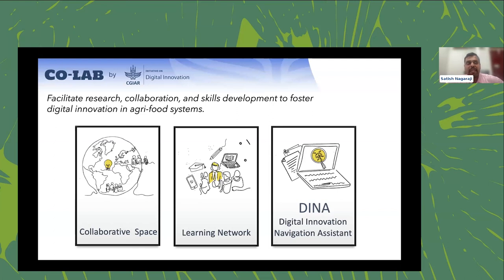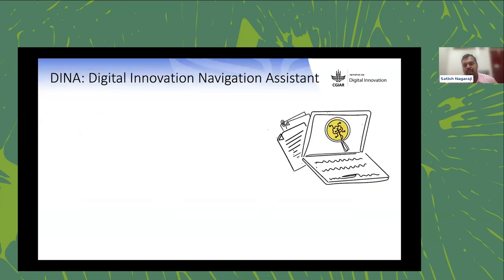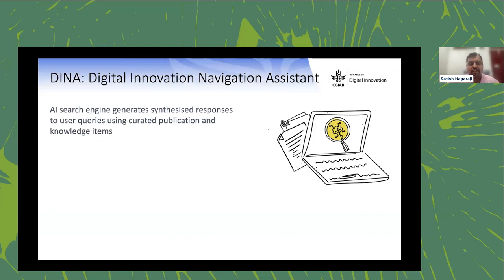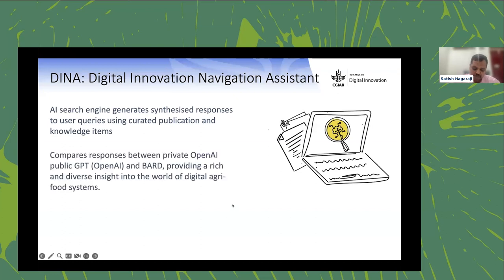The CoLab platform has three key pillars: a collaborative space for co-developing work; a learning network with courses, digital literacy, and mentoring; and the third, called DINA — the Digital Innovation Navigation Assistant. DINA is where we employ AI models to take knowledge buried in huge PDFs and make it consumable, synthesized knowledge for users and researchers.